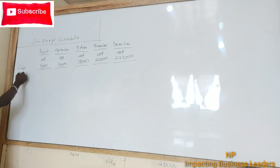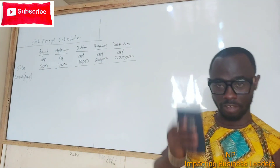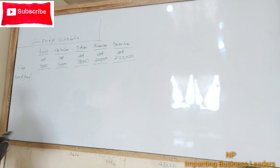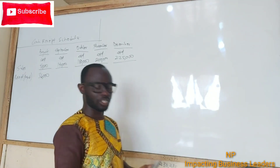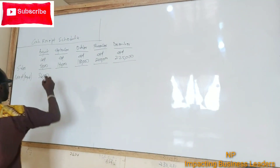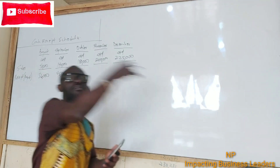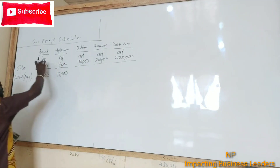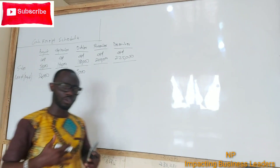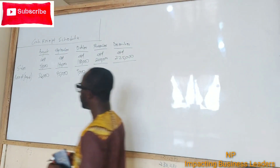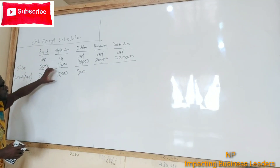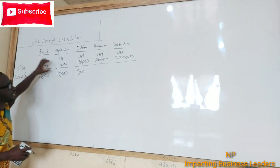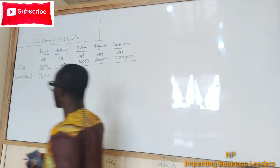Let's look at the receipts for the August sales. For August sales, in August we receive 40%, which is $0.4 × $90,000 = $36,000. The month following the sales — September — we receive 50%, which is $45,000. Then the second month after the sales — October — we receive 10%, which is $9,000. That is how the August sales are received across three months.